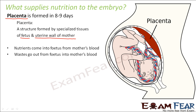Through the placenta and umbilical cord, all the nutrients are passed from the mother's body to the child's body, and this is how the fetus keeps on growing. That is why it is always advised that a pregnant woman should eat well — a nutritious diet — because she is not only feeding herself but also feeding the embryo developing inside her body.